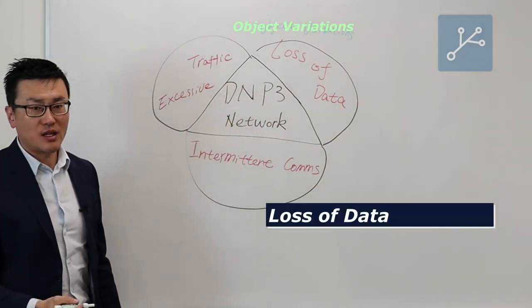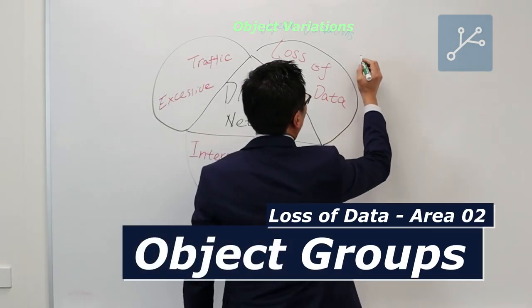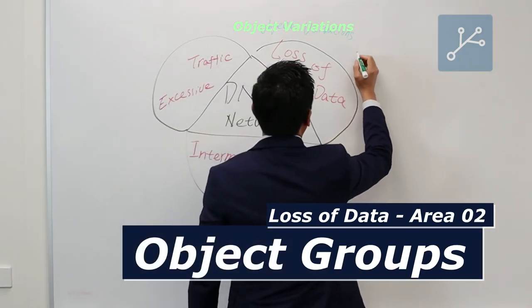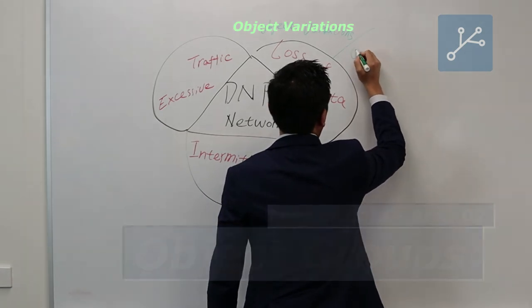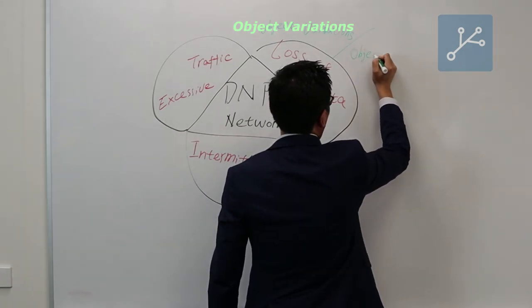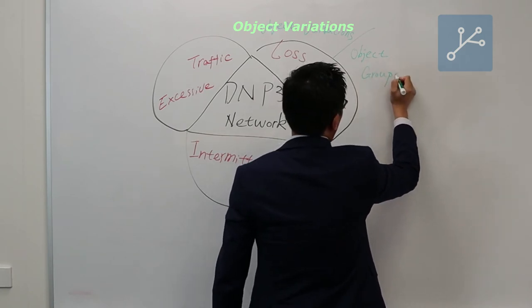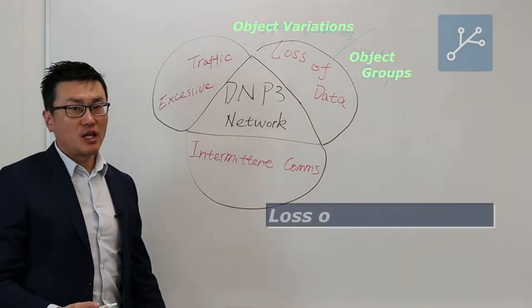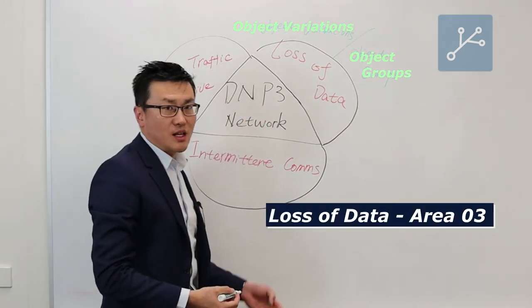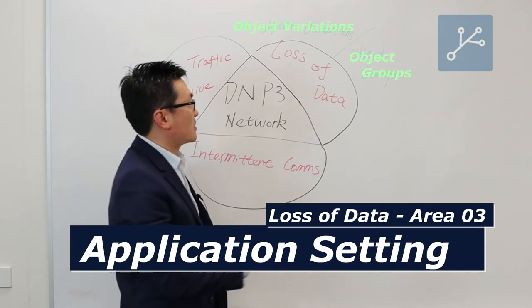The second area is called object groups. The third area to look at under loss of data is called application settings and identify conditions.